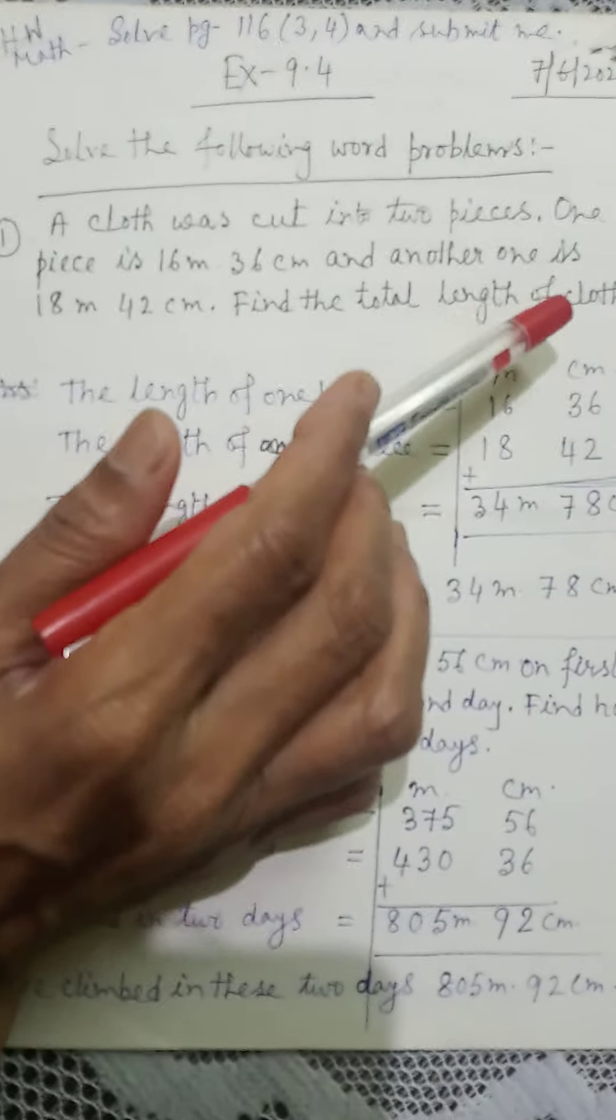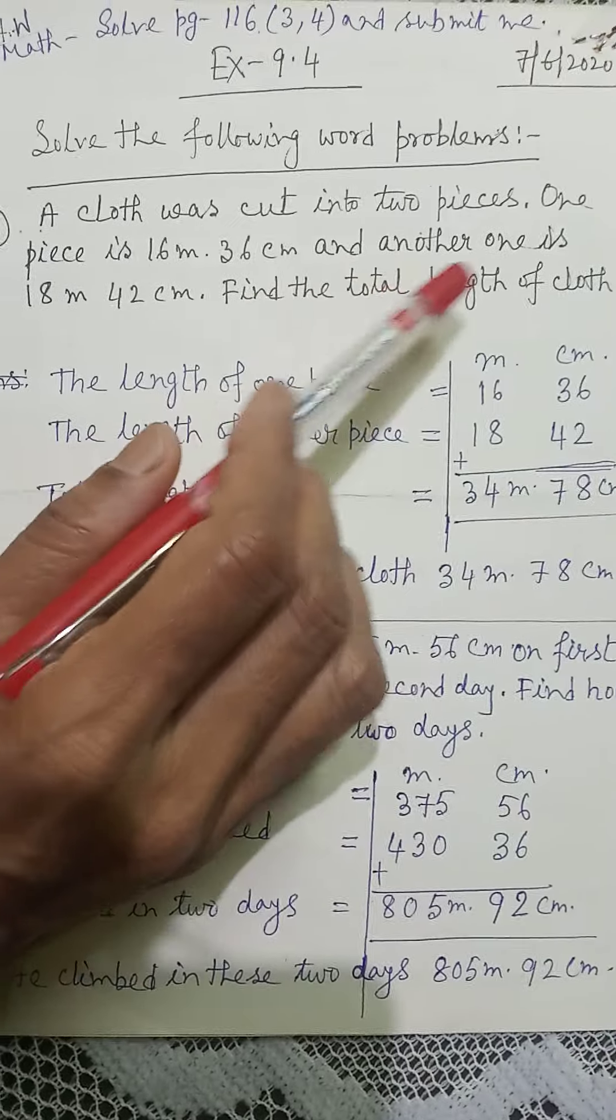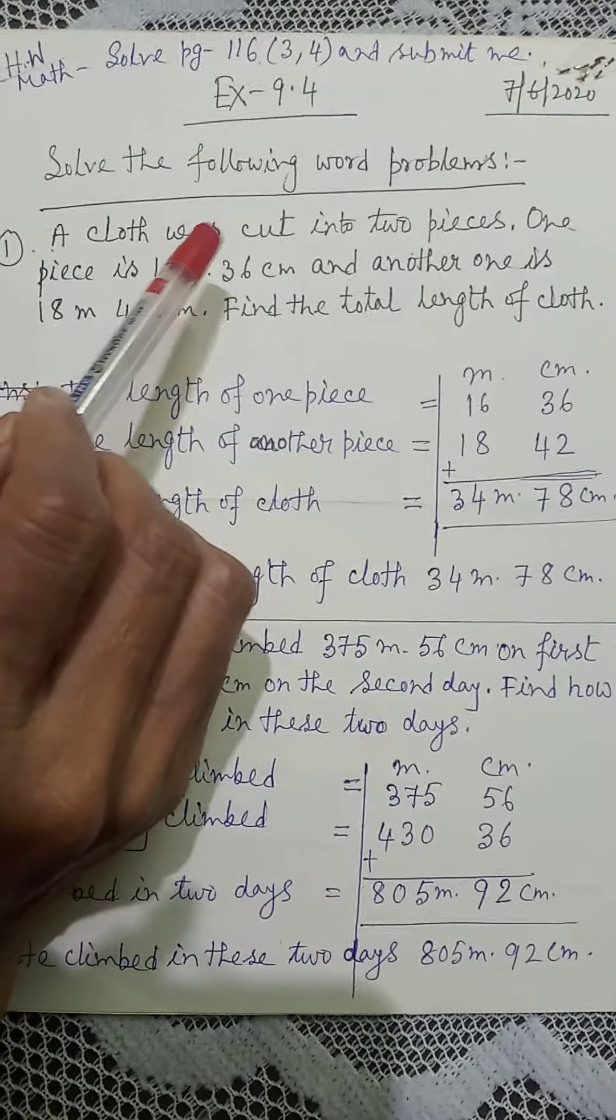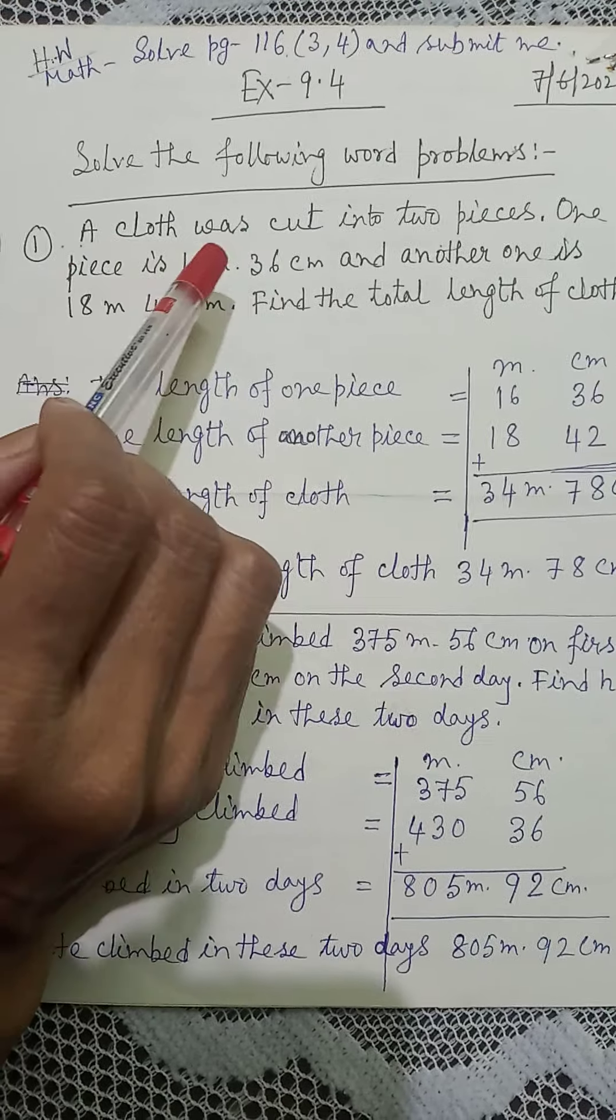Find the total length of cloth. Total length is how much? So, for example, if mommy has one piece which has two pieces.